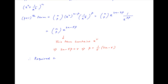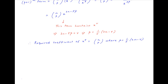Therefore, the required coefficient of x raised to the power r is equal to the coefficient of the (p+1)th term, which is n choose p, where p equals (1/5)(2n minus r). This is equal to n factorial divided by p factorial times (n minus p) factorial.